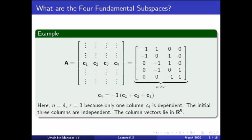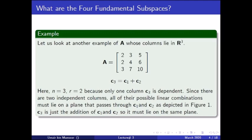The vector space is R^5, the number of rows. Now let's look at another example we can actually visualize. The previous example was in a five-dimensional vector space, so I have used this second example to visualize the vectors in three-dimensional space. Here we have a three-by-three matrix, so m and n both equal three. The first two columns add together to make the third column, so c3 is dependent and c1 and c2 are independent. The rank r equals two.